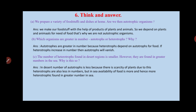The sixth question is Think and Answer. First: we prepare a variety of foodstuff and dishes at home — are we autotrophic organisms? Autotrophic means organisms that make their own food. Although we make different types of food at home, we depend on plants and animals for ingredients. Autotrophs make food through photosynthesis, which we cannot do. So we are not autotrophs — we are heterotrophs.